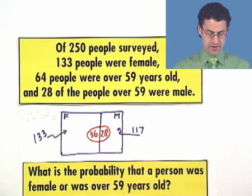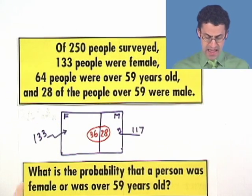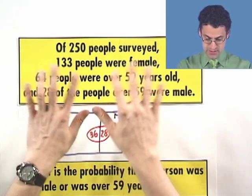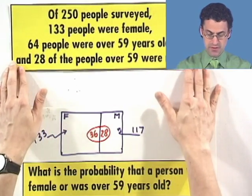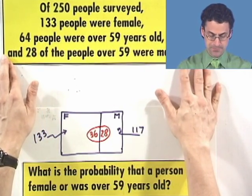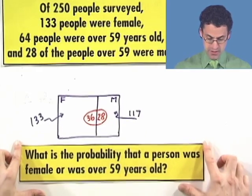So, this is the Venn diagram for this particular scenario. Now, we can let this sort of fade into the background a little bit. We've used all the information from there that we can. And let's now face the question. So, the question now is, what is the probability that a person was female or was over 59?